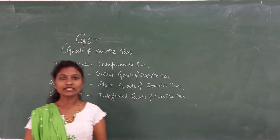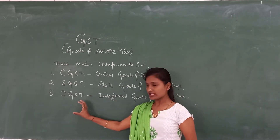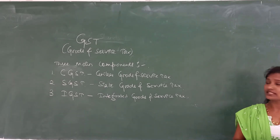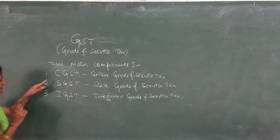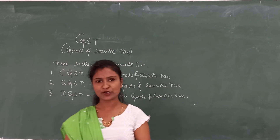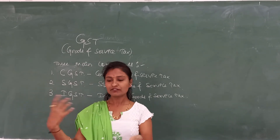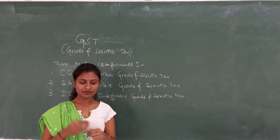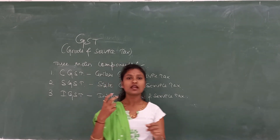This will be explained by an example. We'll take an example of how CGST, SGST, and IGST work. Consider Sima from Punjab who is producing certain goods. She is in Punjab and she sells the goods within Punjab itself — that is, within a state. For that also, the tax will be given by the producer. Let us take a GST rate of 18%.